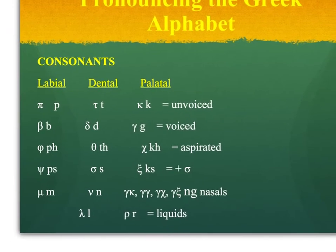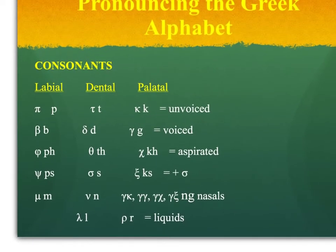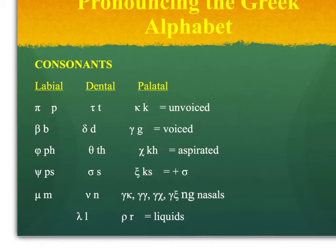And finally, we have two more kinds called liquids. We don't have a labial liquid, but the dental liquid is Lambda, pronounced L, and the palatal liquid is Rho, pronounced R. So in all, if you're keeping track, we are now up to 16 consonants.